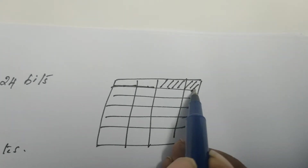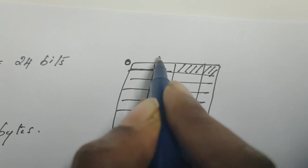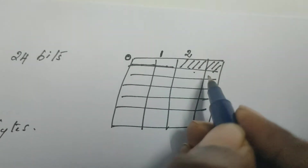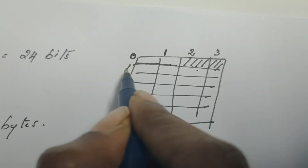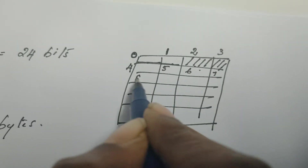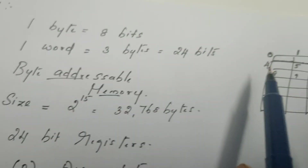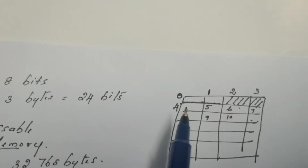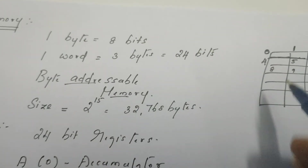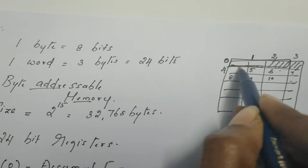Every byte is given an address. For example, the first byte is given address 0, the next byte is address 1, then 2, then 3, and so on. We access the locations of the memory in terms of a word. A word is equal to 3 bytes, meaning at a stretch we can access 3 bytes — that is, 24 bits together.